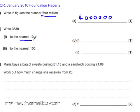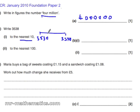Now, 3538 — to round this to the nearest 10, it is between 3530 and 3540, and it is closer to 3530, so there you go.